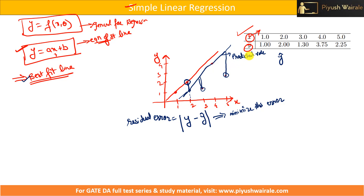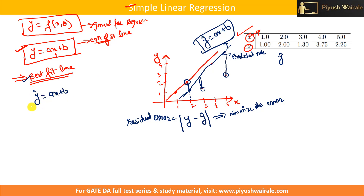For finding out the predicted value, we need to find out the equation of the line, which is y equals to ax plus b. This will give us the predicted value y-bar. To find out the value of this expression, we need to find out the value of a and b using the least square method.